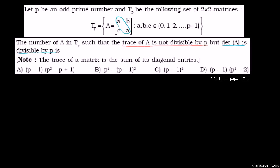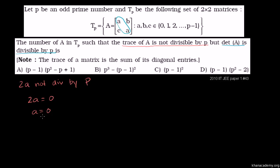Using the first piece of information: the trace of A is not divisible by P. The trace of A is going to be A plus A, or 2A. So 2A is not divisible by P. Let's think about when 2A could be divisible by P. 2A could equal 0, because 0 is a multiple of P, in which case A would equal 0. So if A is equal to 0, then 2A is divisible by P.